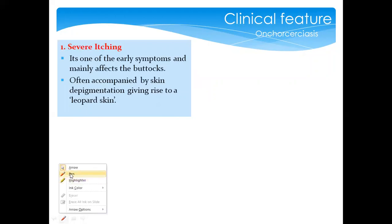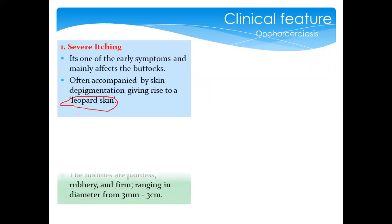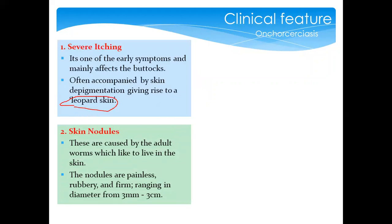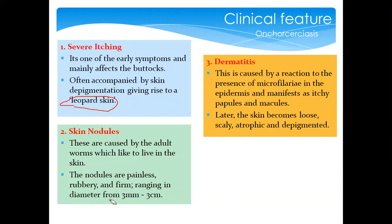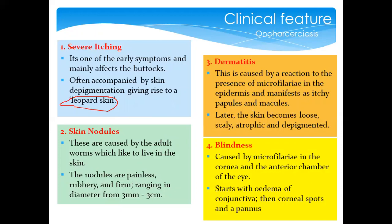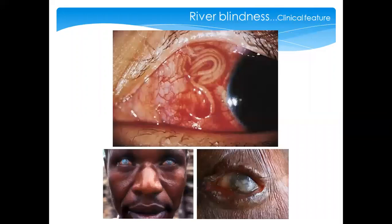Severe scratching causes depigmentation of the skin, leading to what is called leopard skin. Skin nodules are caused by adult worms that have lived in the skin for a long time, forming a painless, firm, subcutaneous nodule. Dermatitis is caused by the microfilariae, which elicit an immunological reaction. Blindness results from invasion of the microfilariae into the eye, causing edema, conjunctivitis, and spots, ultimately leading to blindness.